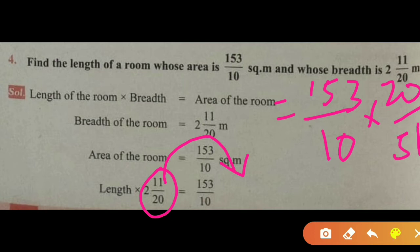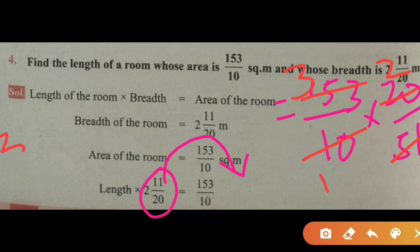Keep the length on the left hand side and transpose the breadth to the right hand side. The equation becomes length equals 153 divided by 10 multiplied by 20 divided by 51. Simplifying: 20 divided by 10 is 2, and 153 divided by 51 is 3, so the numerator is 3 into 2 and denominator is 1 into 1, giving 6.